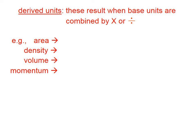Derived units result when base units are combined by multiplication or division. For example, the unit for area is a derived unit. It's the result of multiplying length times another length, so that unit in SI might be meters squared.